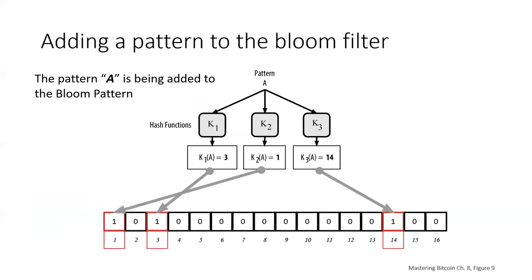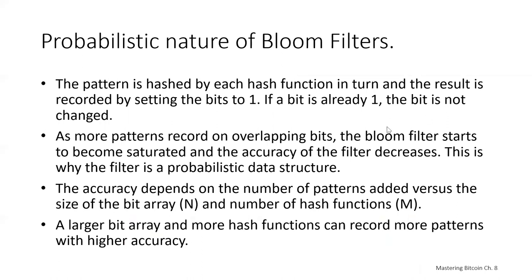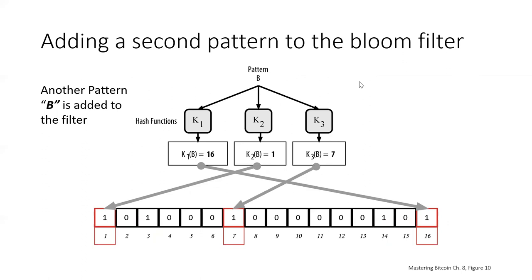Here we show pattern A being added to our simple bloom filter with three hash functions. Passing in pattern A: the first hash function outputs 3, the second outputs 1, the third outputs 14. So bits 1, 3, and 14 are now set to one. Now we add a second pattern B: K1 becomes 16, K2 becomes 1, K3 becomes 7. Bits 7 and 16 are brand new; bit 1 was already set so it stays as one. Now five of these cells have been set to one.